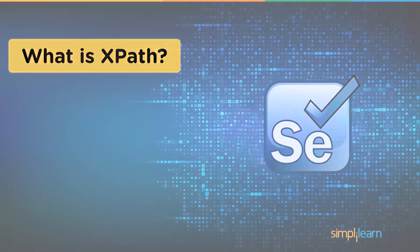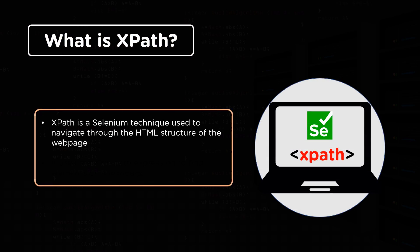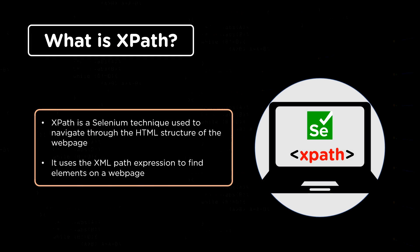XPath stands for XML Path Language. It is a Selenium technique used to navigate through the HTML structure of a webpage. It is a syntax or language that makes finding elements on a webpage possible using XML Path expression. There are other locators in Selenium that search for elements using tags or CSS class names, and they are simple to use, but they are not always efficient and effective. There are times when you need to select all DOM elements of an HTML document, which is when XPath comes to your rescue.